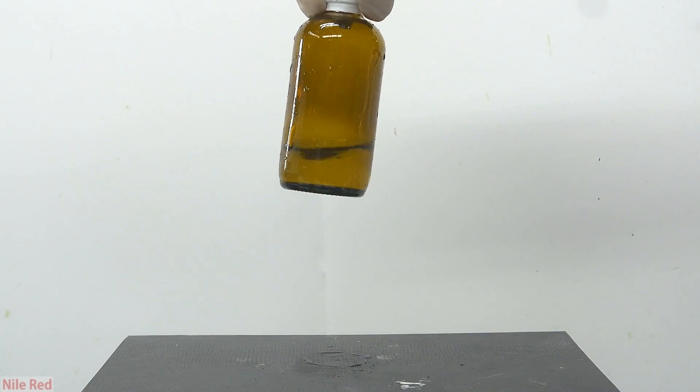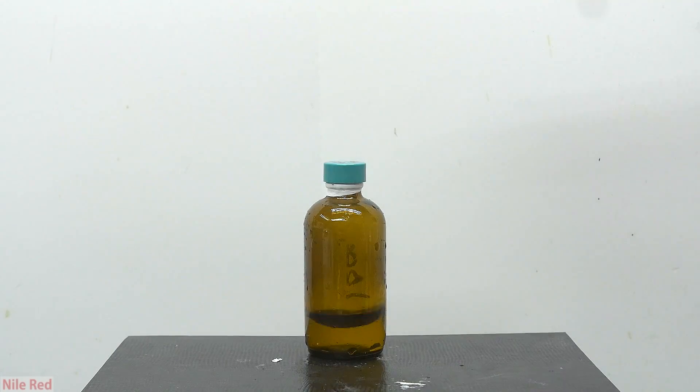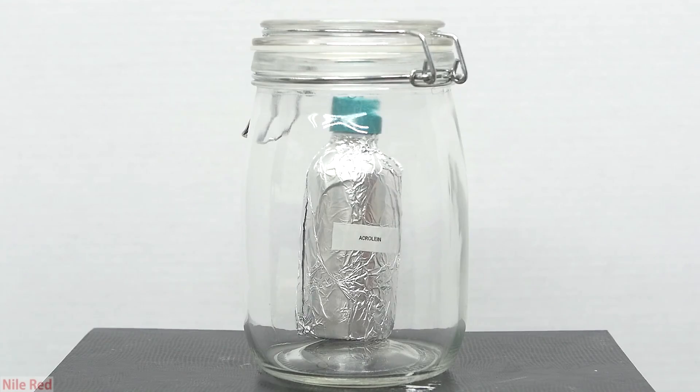Anyway, the bottle was still a little bit wet from the ice bath, so I dried it off and covered it again with aluminum foil. As an added safety precaution, I stored the bottle of acrolein in a sealed jar.